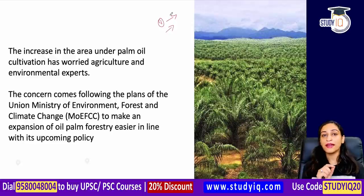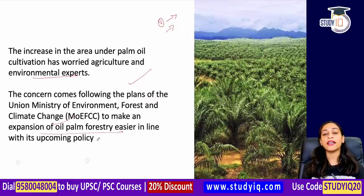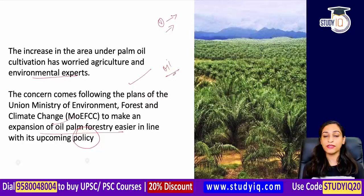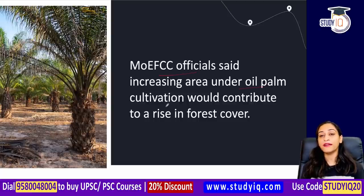But now the problem is: if we increase the land here, the agricultural and environmental experts have a concern. The concern is coming from this plan. The government wants to expand oil palm forestry, and the upcoming policy will make it easier for people who want to convert the land for oil palm cultivation. Officials think that if oil palm cultivation increases, then forest cover will also increase.